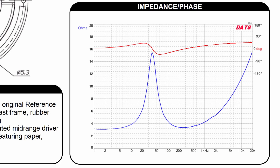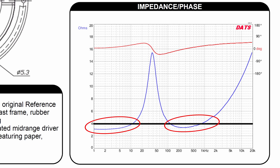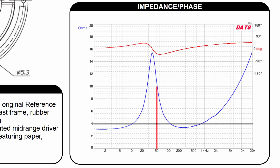If we plot out the nominal impedance, which is 4 ohms in this case, we can see that the majority of the frequencies are around 4 ohms. However, there are also frequencies which are much higher than that. For example, at 50 Hz the impedance is 10 ohms.